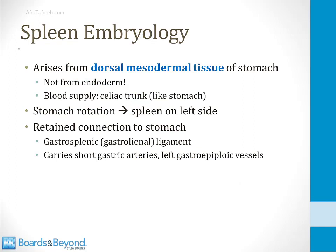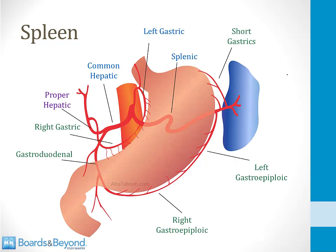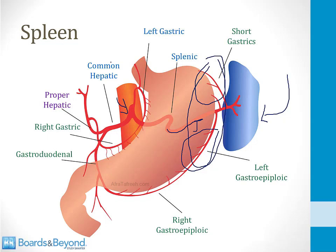The spleen is unusual in that it arises from the mesoderm, not the endoderm like most abdominal structures. However, its blood supply is the celiac trunk, just like stomach — so it has the blood supply of a foregut structure but develops from mesoderm. During normal development, the stomach rotates and the spleen moves to the left side, retaining a connection to the stomach called the gastrosplenic ligament (also called the gastrolienal ligament), which carries the short gastric arteries and left gastroepiploic vessels. That concludes the module on GI embryology.